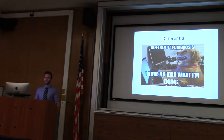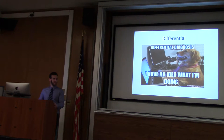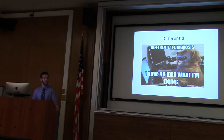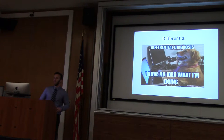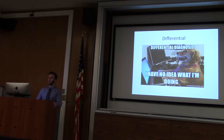Back to the juniors — let's get a more extensive differential. What's highest on our differential right now? CHF — acute heart failure is definitely high on the list. What else? PE — definitely on the list. Liver — that could definitely be causing these symptoms.